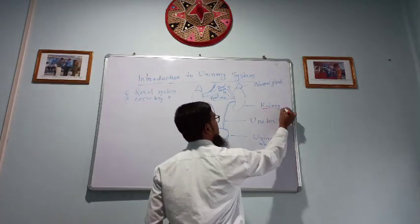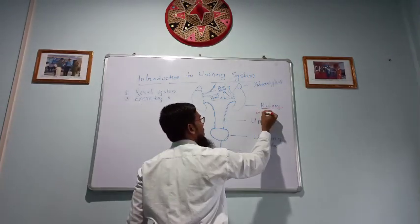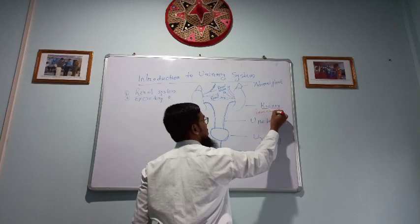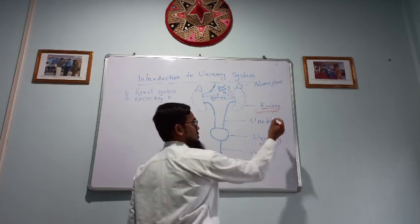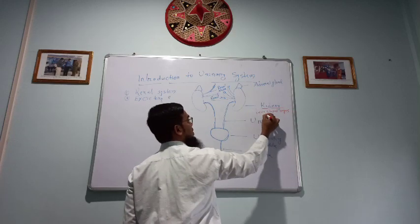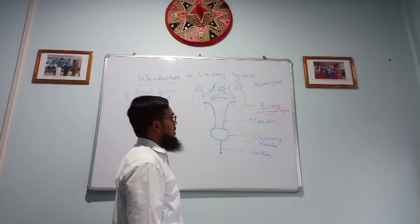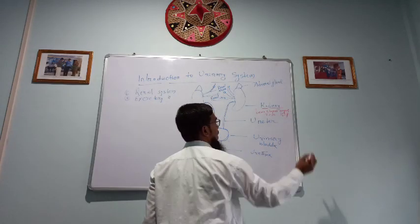Kidney, first thing, kidneys are bean-shaped organs. Its length is around 11 cm in adult and weight is around 160 grams.